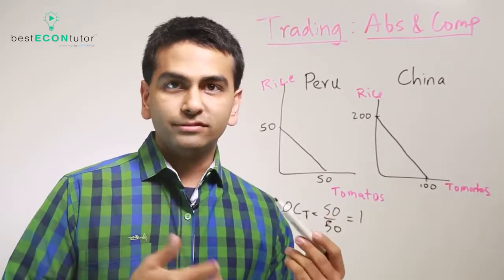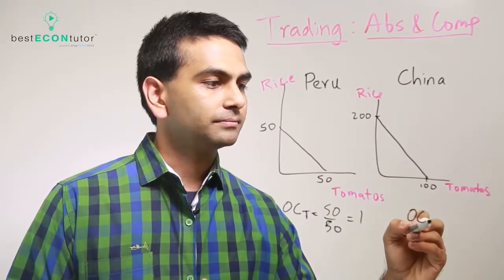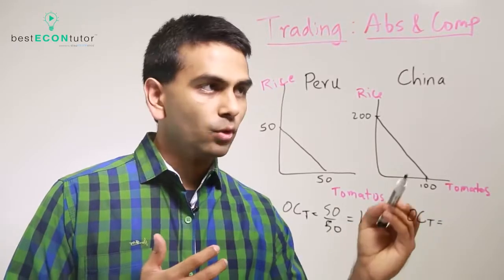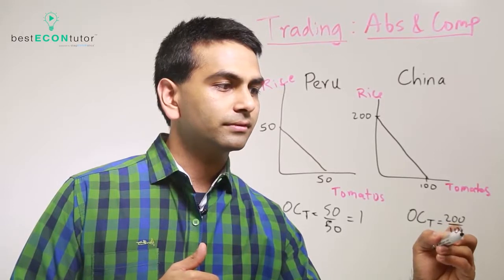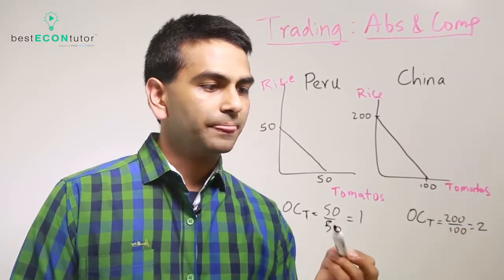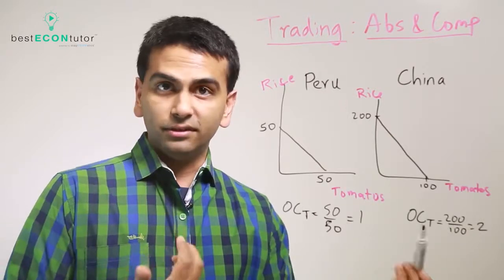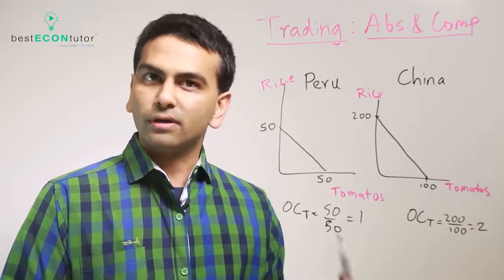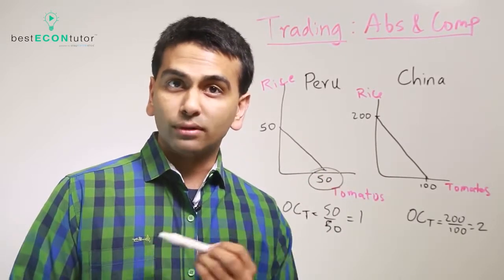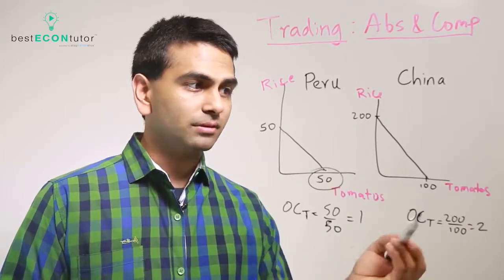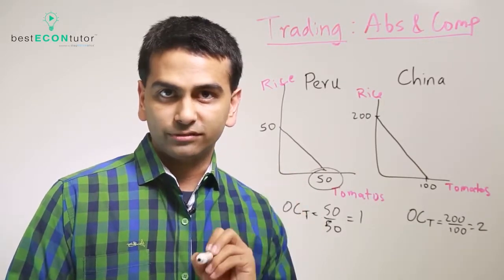Now what is China's opportunity cost for tomatoes? Well, 200 rice over 100 tomatoes, which is 2. So their cost is 1, their cost is 2. For cost we're looking for the lower cost, right? So Peru actually wins. They have the lower opportunity cost for tomatoes compared to China. So that's why they have the comparative advantage for tomatoes.